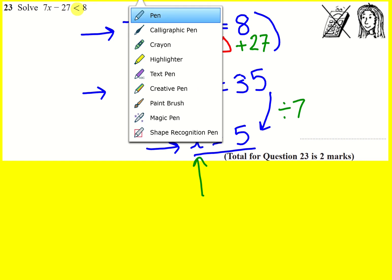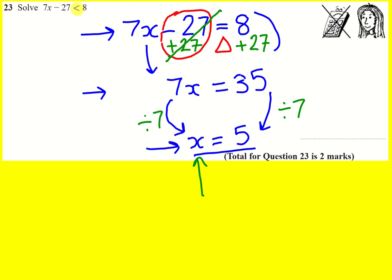But now I need to think about putting it back into my inequality. I had a less than symbol here, so all I'm going to do is put that back in my answer. I'm going to change it to x is less than 5. I've just used the process of solving a normal equation to get my answer, but then just make sure that you remember to put that back in.